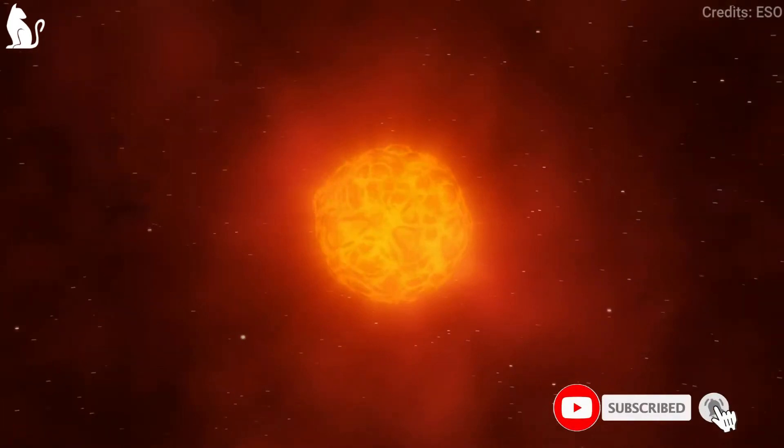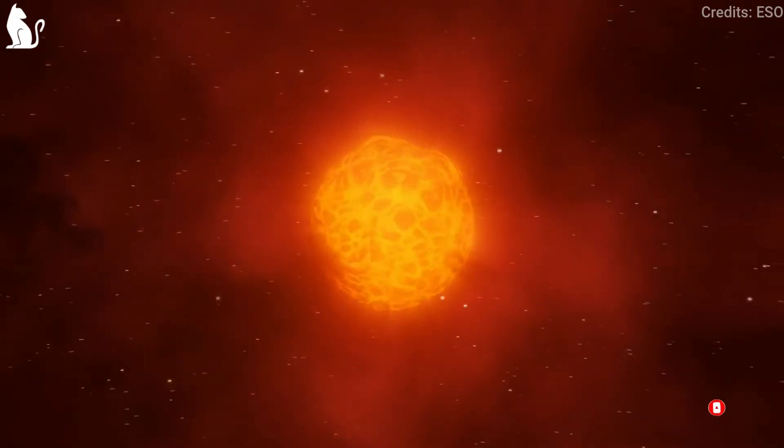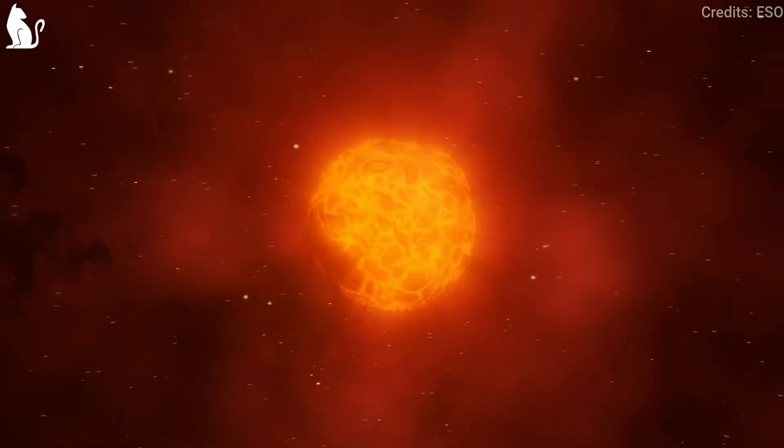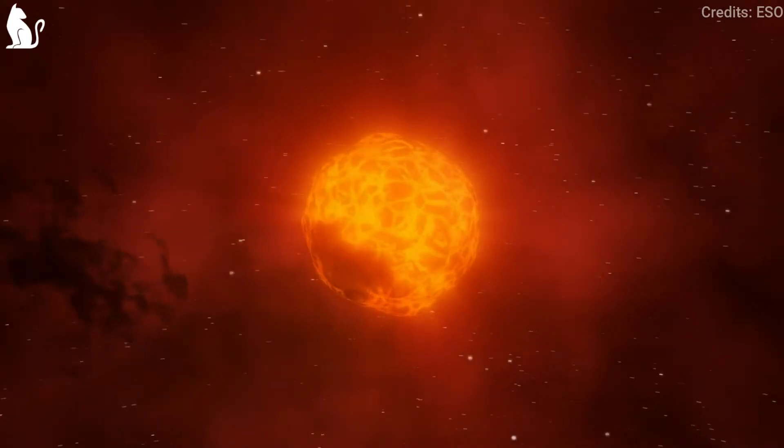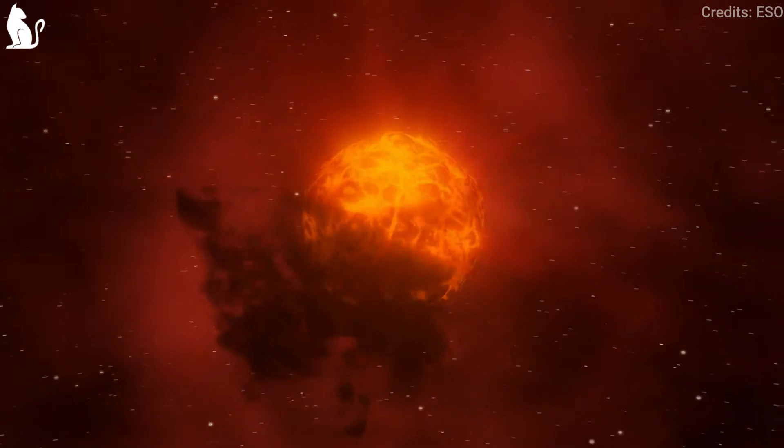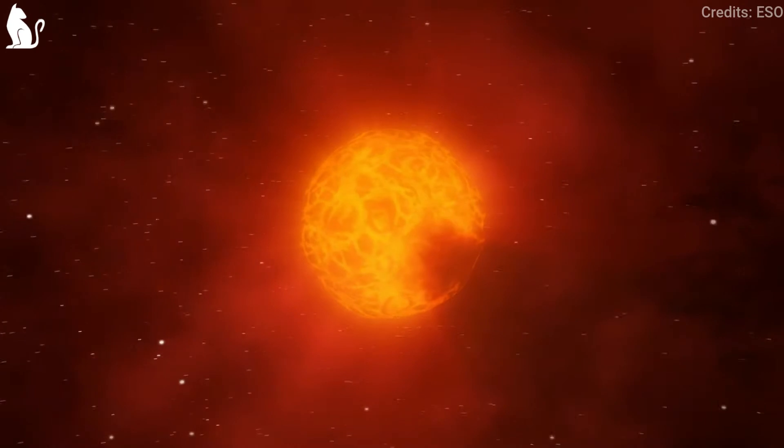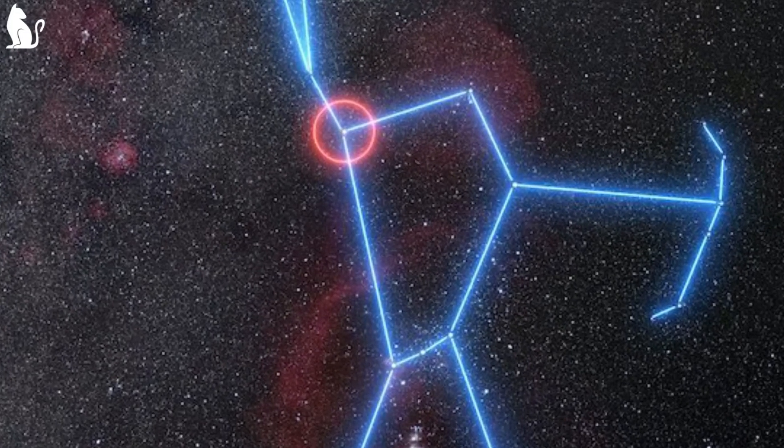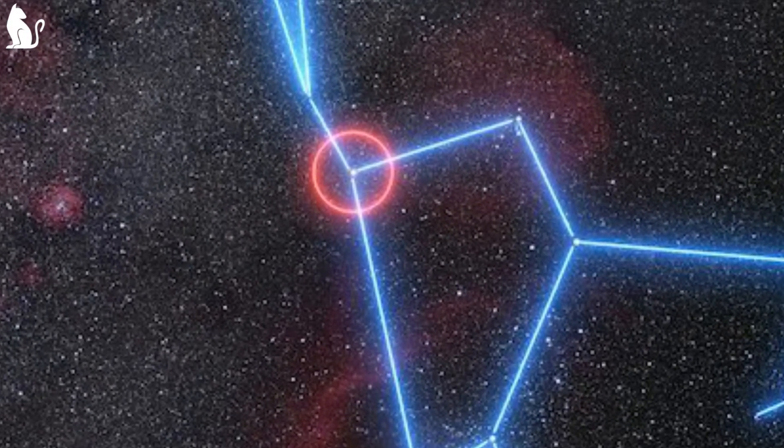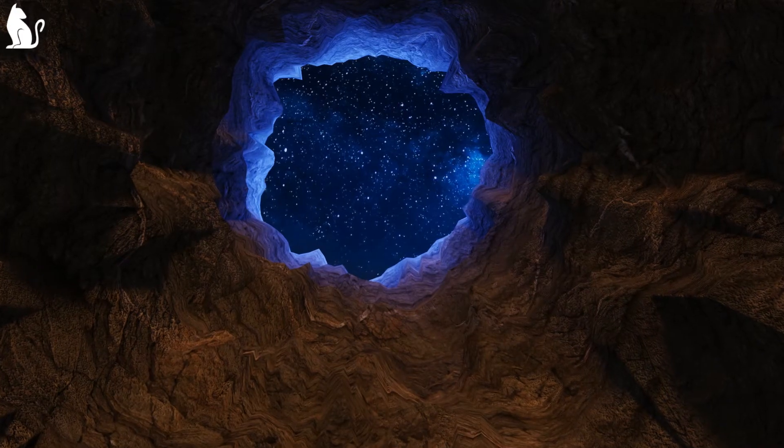A few years back, scientists discovered that Betelgeuse has lost its brightness. So everyone was so excited. Astronomers thought this will be the first supernova that will be visible from the Earth's night sky without a telescope. It is only 724 light years away, and you can easily find it in the night sky. It is the right shoulder star of the constellation Orion. If Betelgeuse explodes, its brightness will be similar to some planets, or maybe brighter. But, Betelgeuse did not explode.